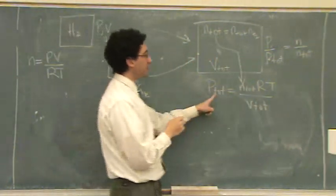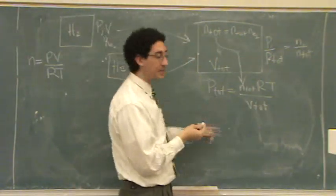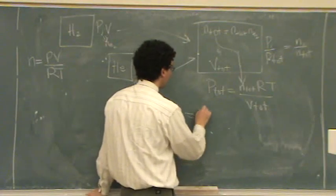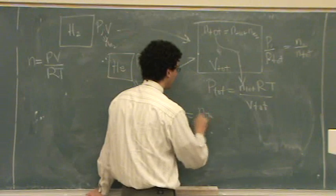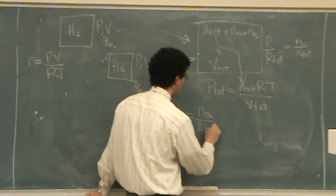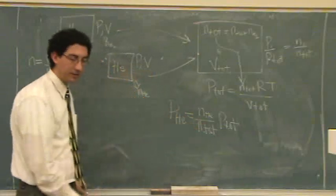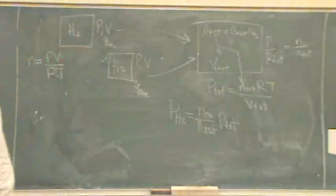So you have all those terms, which means you have P total. To find each partial pressure, for example the partial pressure of helium, it's N helium over N total times P total. And the same thing for hydrogen. That's a basic setup idea.